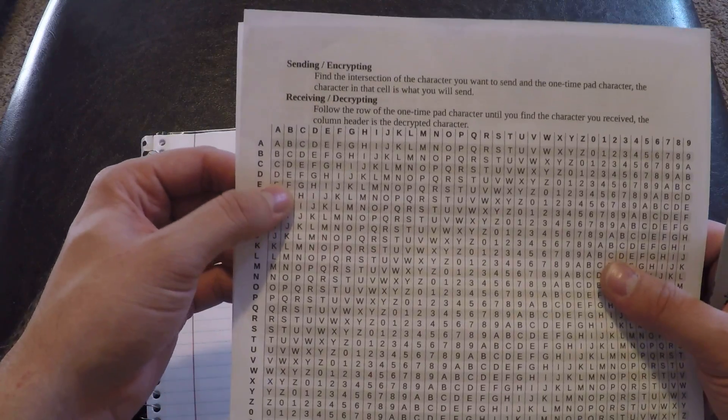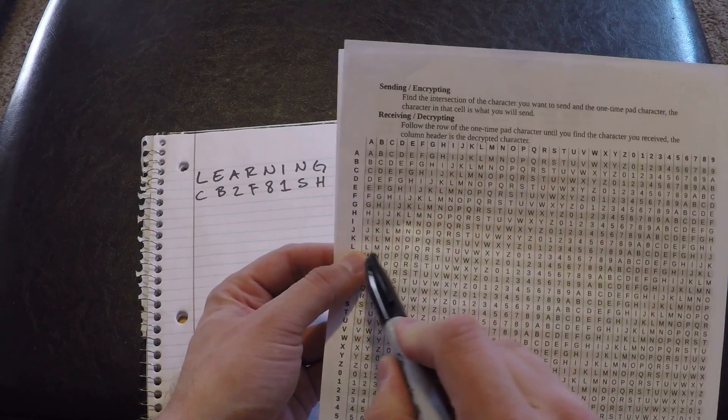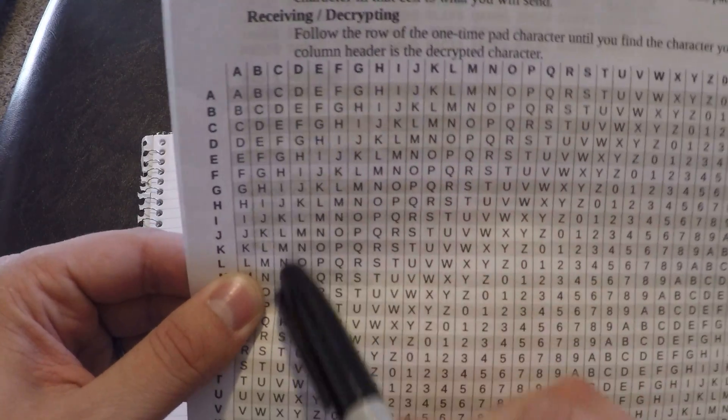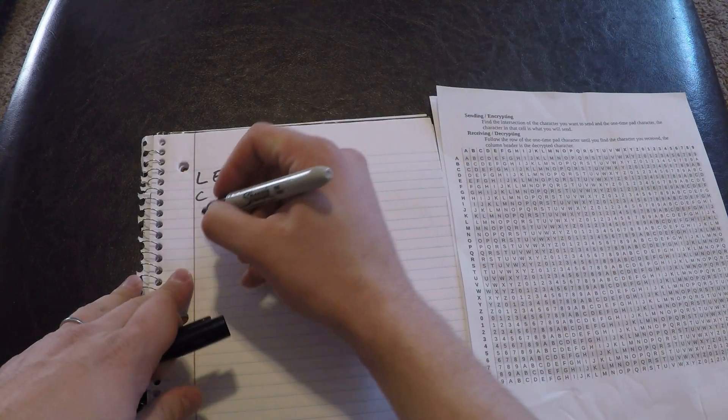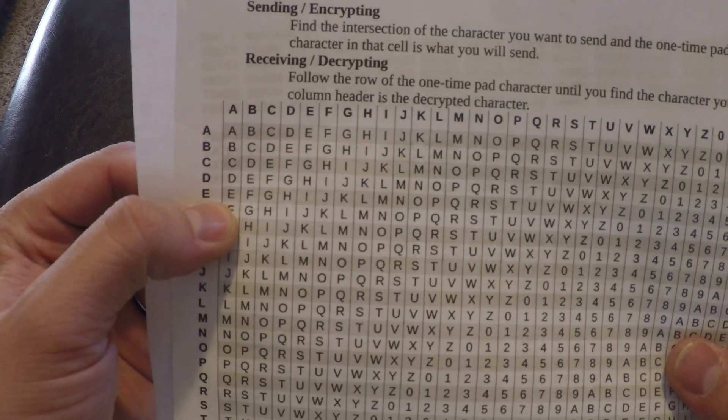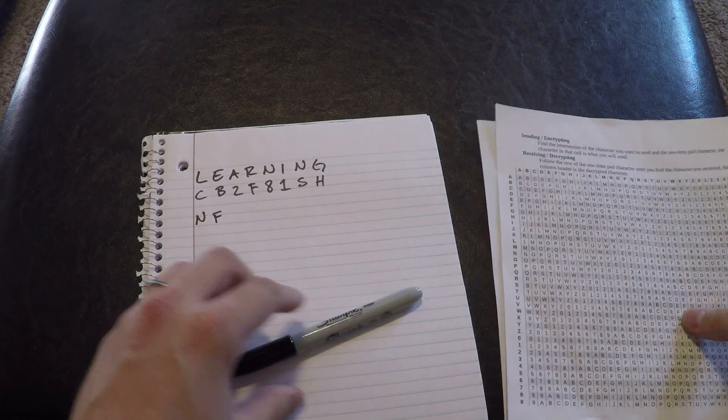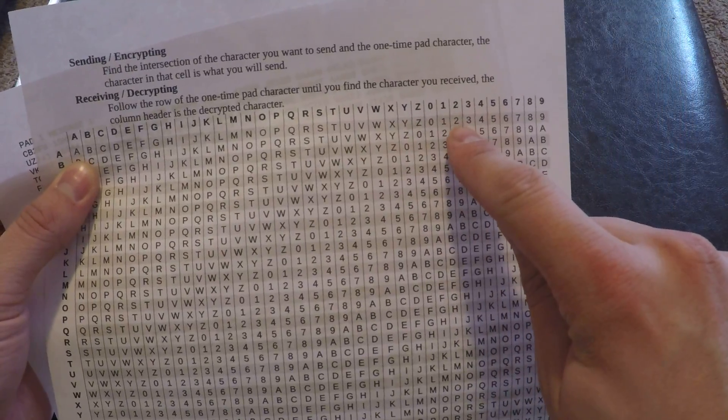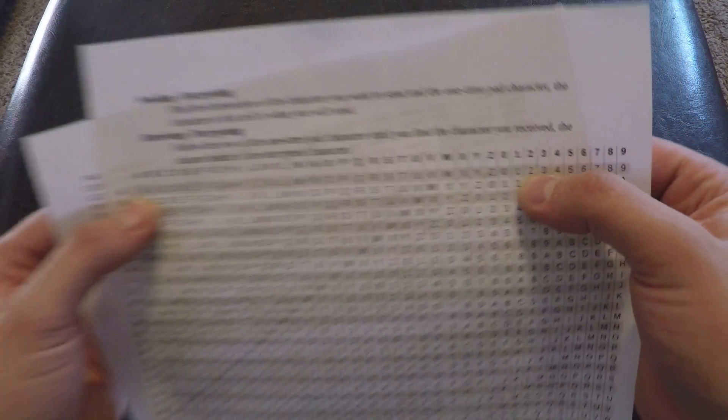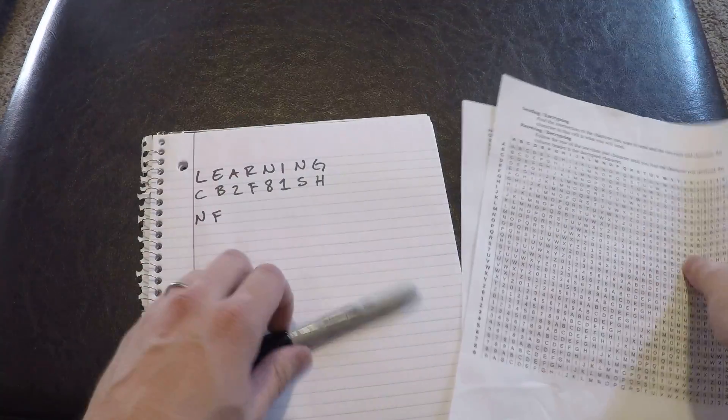Now we're going to take this cheat sheet, and we're going to add these two letters together. Find the intersection of the character you want to send and the one time pad character. So we want to send L, and we need to add C to it. We're going to find the intersection of L and C over here, which is N. So I'm going to write that underneath, N. Then I'm going to do it again for E and B. We're going to go on E here, move over to B, which is F. And then we need to do A. A, we go over to 2, which is pretty far over here, which is 2. A is a special kind of thing like that. It's going to come out as what it is over here, but that's not an issue. Not a problem. That's the way it works. It's just fine.